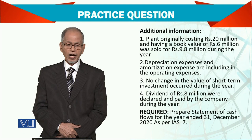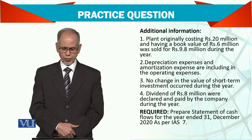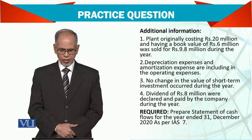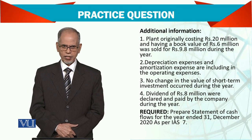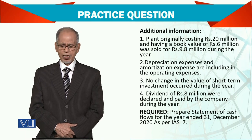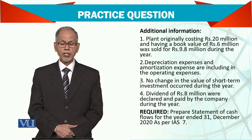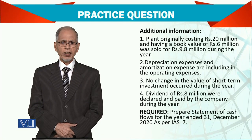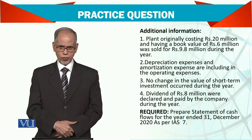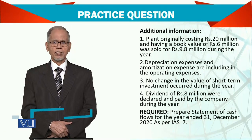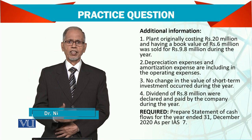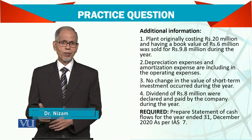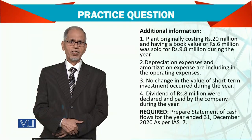The additional information regarding the income statement and balance sheet: a plant originally costing 20 million with a book value of 6 million — after taking out 14 million depreciation on this particular plant — was sold for 9.8 million. Straightaway, 9.8 million is the cash inflow, and the profit of 3.8 million is taken to the profit and loss account, so we need to remove it from the P&L because we are taking the whole amount as an inflow in investing activity.